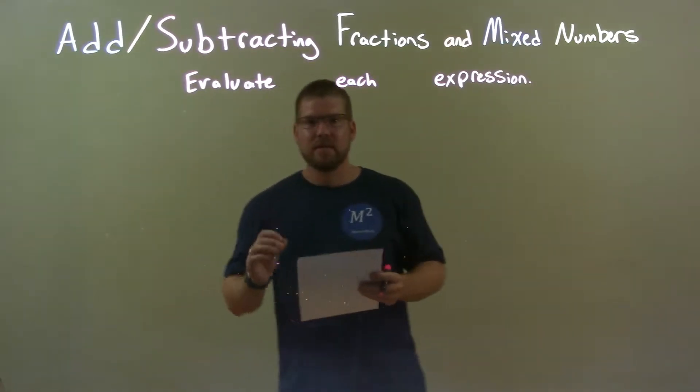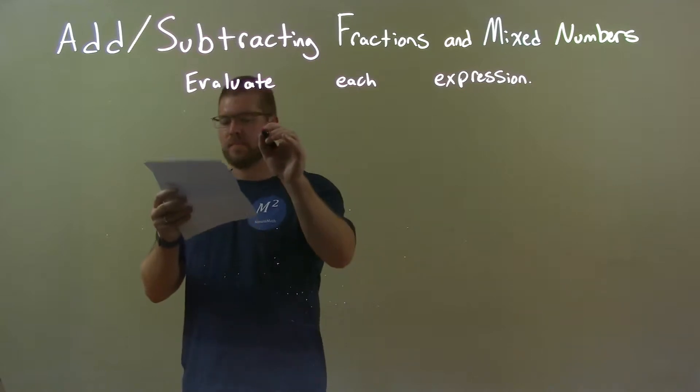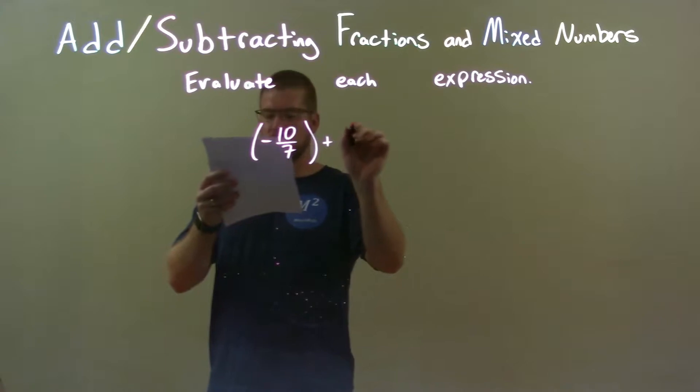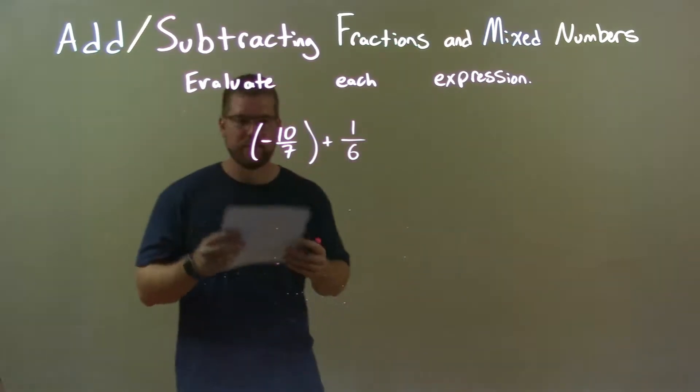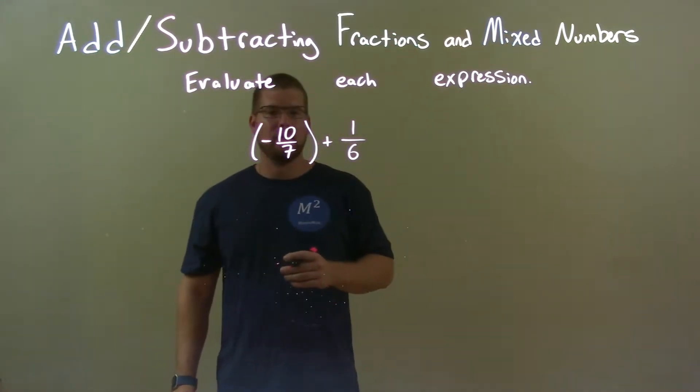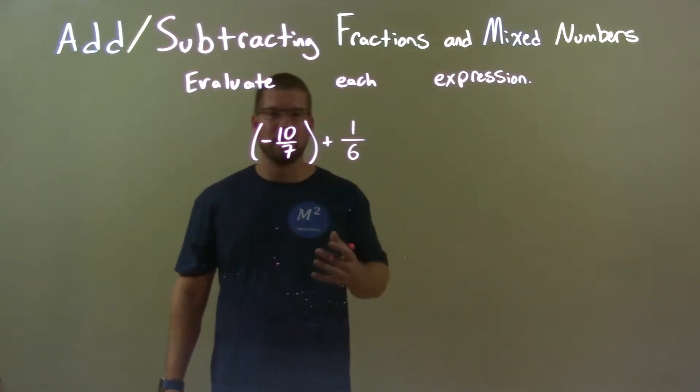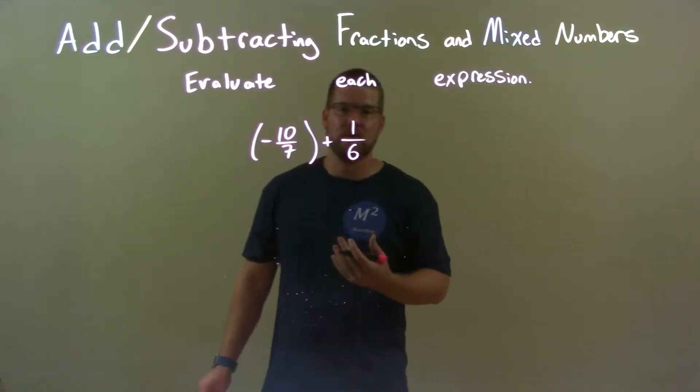So, if I was given these numbers, negative 10 over 7 plus 1 over 6. Now, the first thing I see here is these two numbers don't have the same base. So we can't add them directly, but we can make them have the same base, then we can add them.